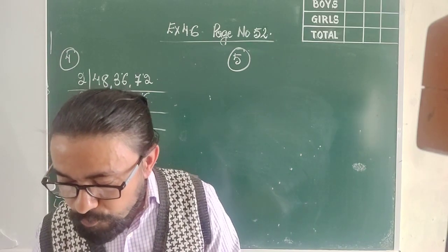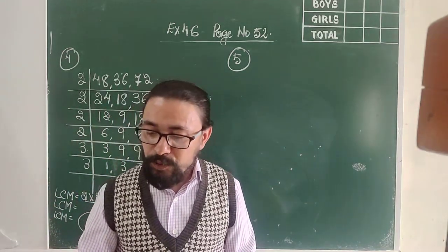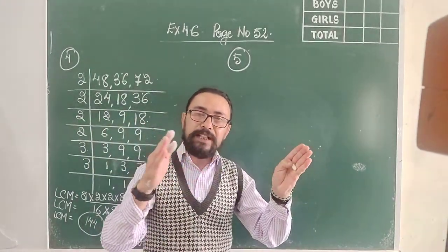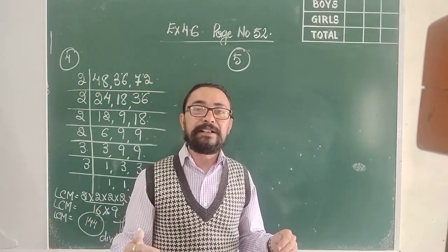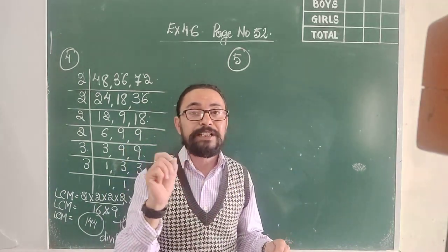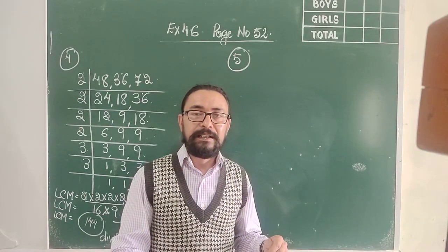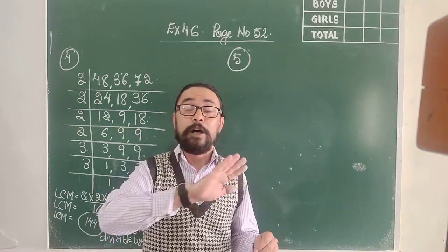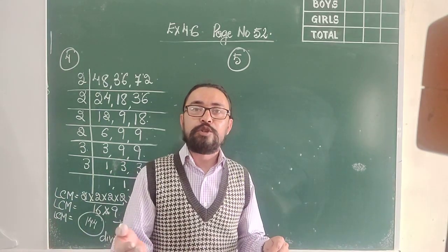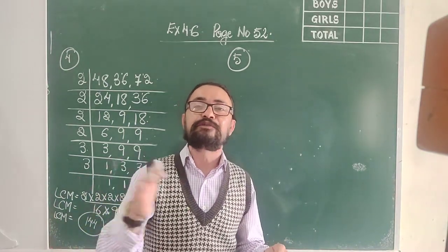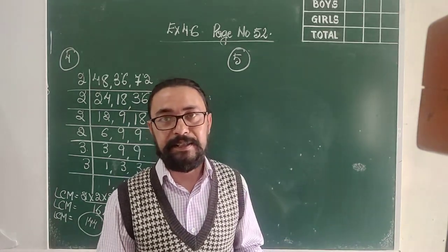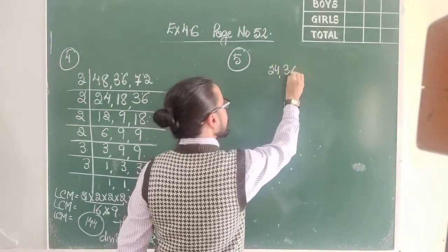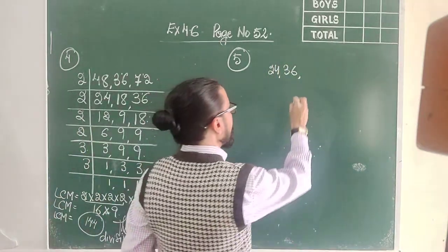The sum is saying: find the smallest number which when divided by 24, 36, 54 and 60, leaves 4 as the remainder in each case. That means I take the 4 numbers, find the least common multiple, and then add 4 to my final answer. Let's find the LCM of 24, 36, 54 and 60.